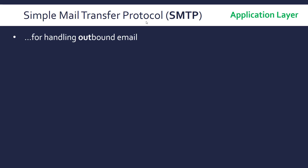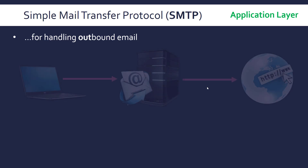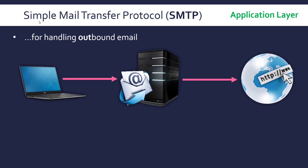Now for something slightly different, we've got the Simple Mail Transfer Protocol, SMTP. This is again the application layer protocol and this is for handling outbound email. So the client — and in this case we're talking about the application of the email client rather than a human or the laptop in general — the actual application that's sending the email will send the email to a mail server which will potentially run SMTP, and then this will be connected to the internet.